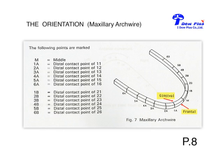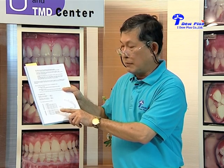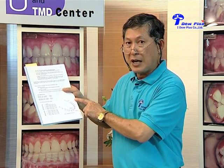We mark at 1A, 2A, 3A, 4A, 5A, and 6A. 1A is the distal contact point of the central incisor. 2A is the distal contact point of the lateral incisor. 3A is the distal contact point of the canine. 4A is the distal contact point of the first premolar. 5A is the distal contact point of the second premolar. 6A is the distal contact point of the maxillary first molar. To repeat: the A side is the right-hand side of the patient, and the B side is the left-hand side of the patient.